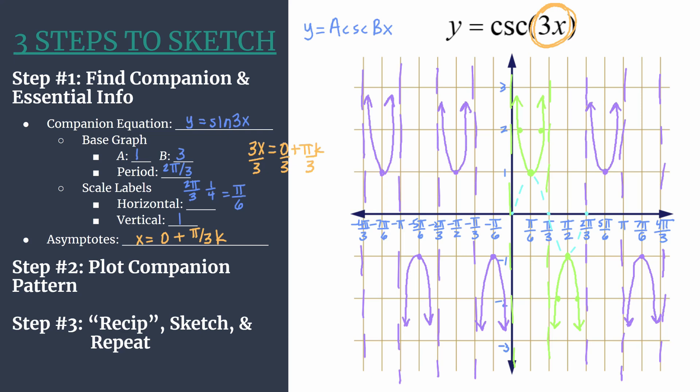Now we have a really nice sketch of y equals cosecant 3x using this three steps to sketch method. Hopefully this worked example helped you understand the method a little bit more so that you're confident using it in any unshifted cosecant equation.